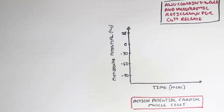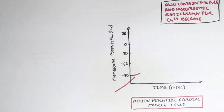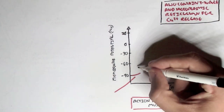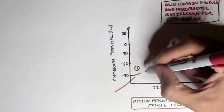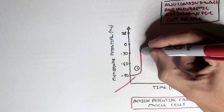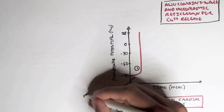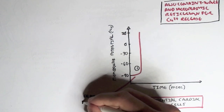Just after the heart muscle contracts and releases blood out, it will be at rest. After this short rest, which is typically negative 90 millivolts, there will be a big jump in the membrane potential to become more positive, shooting up to positive 30 millivolts. This process is known as depolarization.